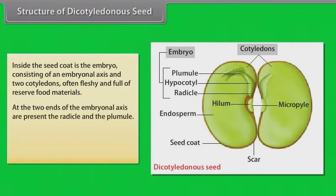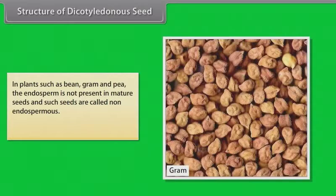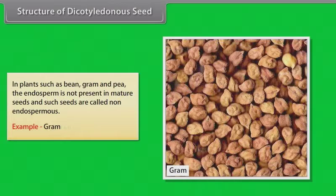At the two ends of the embryonal axis are present the radicle and the plumule. In some seeds such as castor, the endosperm formed as a result of double fertilization is a food-storing tissue. In plants such as bean, gram and pea, the endosperm is not present in mature seeds, and such seeds are called non-endospermous — example: gram.